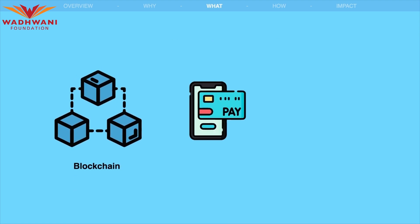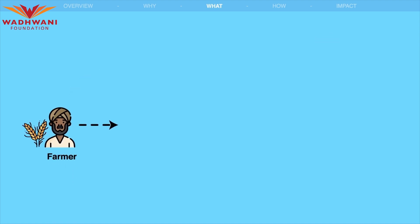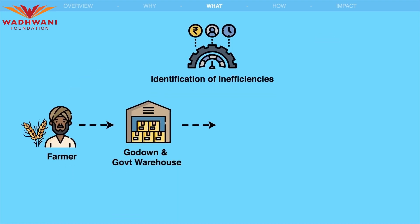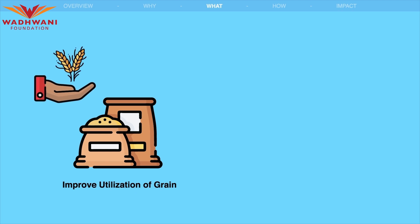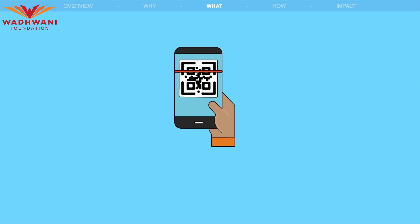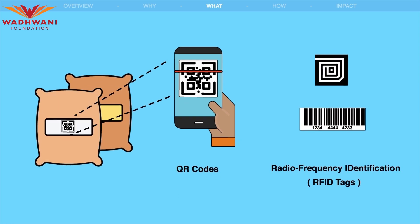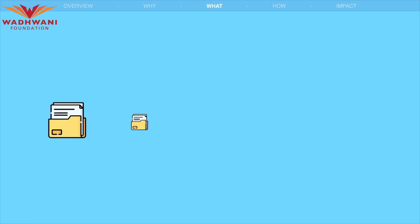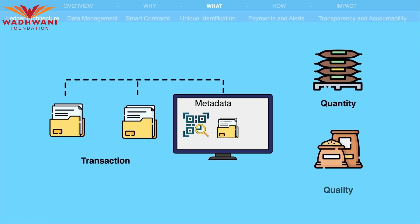By creating a transparent and tamper-proof end-to-end system, the blockchain can enable payments to farmers and millers, facilitate the identification of inefficiencies and inaccuracies in the supply chain, and improve utilization of grains while reducing wastage. The system would also use QR codes or RFID tags to uniquely identify bags of grains and store transaction metadata regarding quantity and quality.